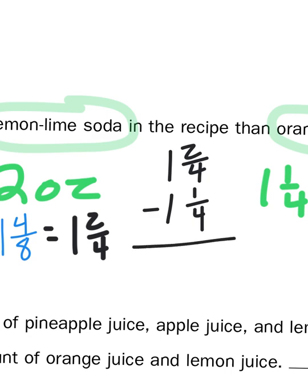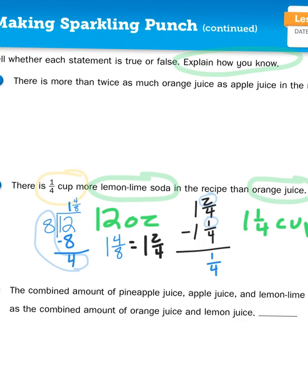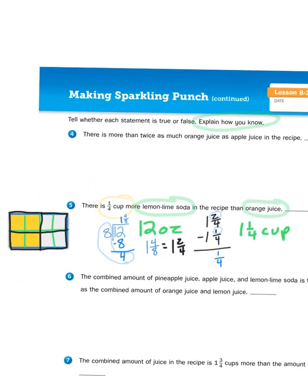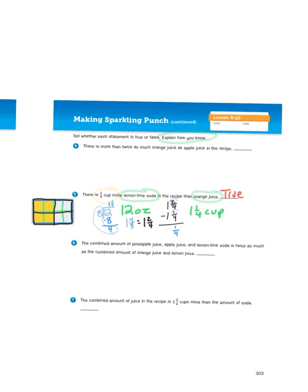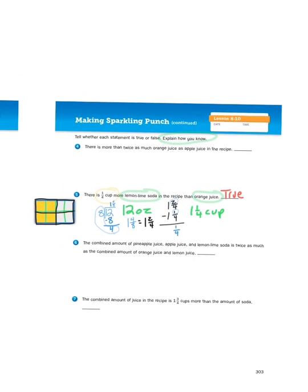So, let's reread this statement. There is 1 fourth more cup lemon-lime soda in the recipe than orange juice. Well, as our calculations have shown us, that, my friends, is true. And that's how you would go about proving that these statements are either true or false. Showing the work, demonstrating your knowledge of fractions, and showing your logic.